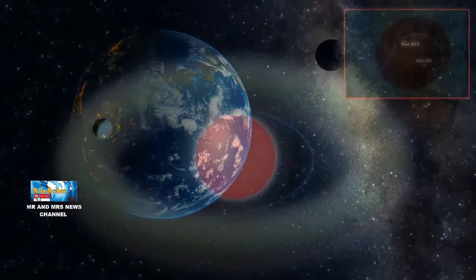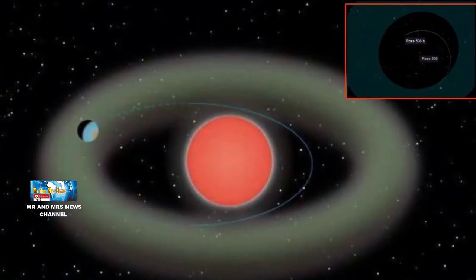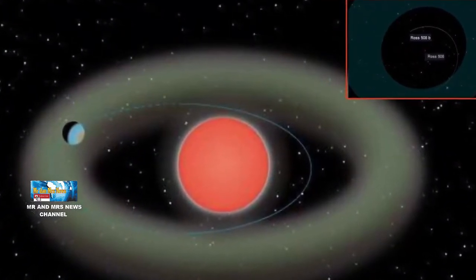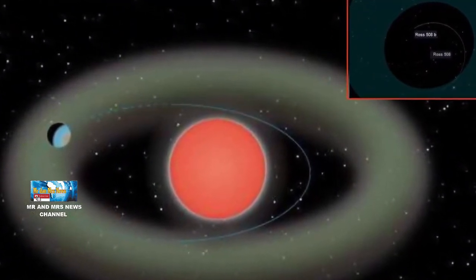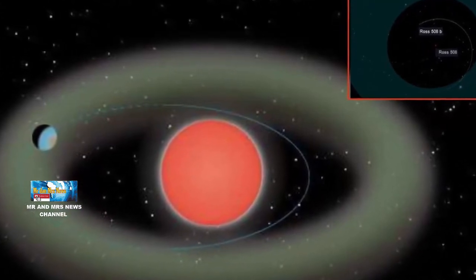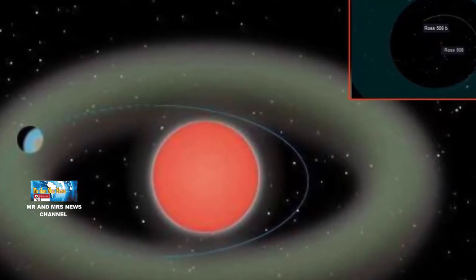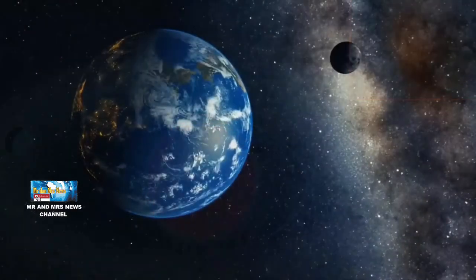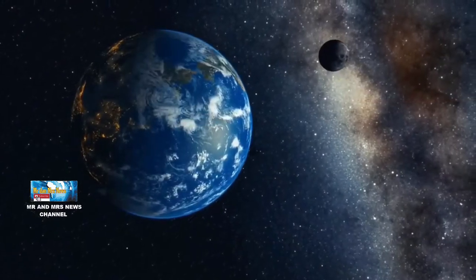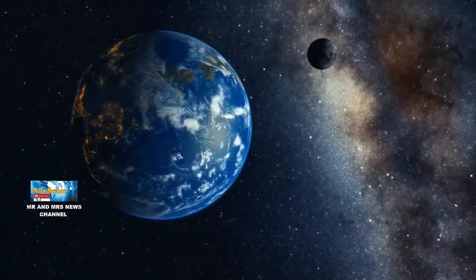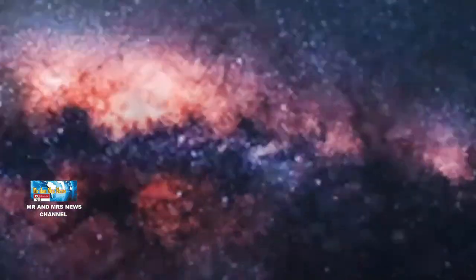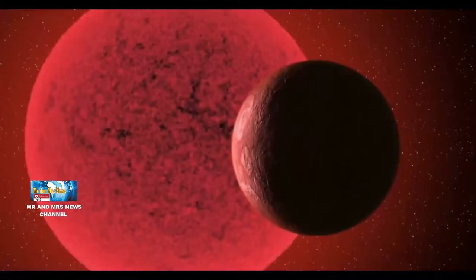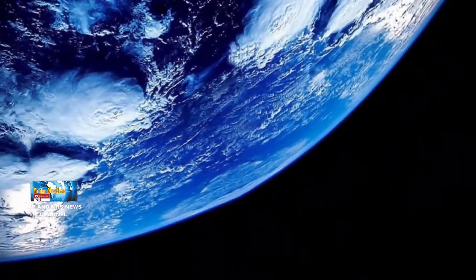Para ilmuwan telah menemukan super bumi yang 4 kali masa planet kita dan hanya membutuhkan 10,8 hari untuk menyelesaikan 1 tahun penuh. Menurut badan antariksa Amerika Serikat, NASA, planet ekstra surya yang disebut ROS-508D ditemukan menggunakan teknik pematuhan infamerah baru. Letaknya 37 juta tahun cahaya dari kita.